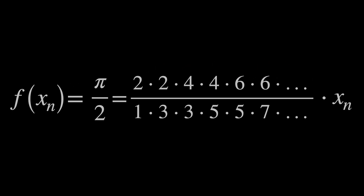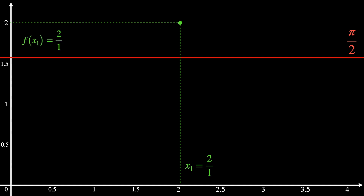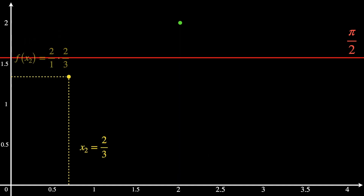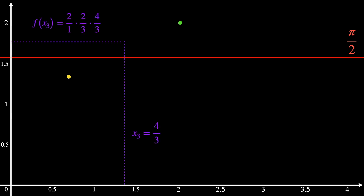Let us plot the graph. Since we want to approximate π over 2, we draw the horizontal asymptote y = π/2. The first input x1 is 2 over 1, and its output f(x1) is also 2 over 1 — no surprises. The next iteration has input x2 = 2 over 3, and the output f(x2) is 2/3 multiplied by the previous term. The second iteration is indeed closer to the asymptote line, but weirdly, it is located below the line. Then x3 is 4 over 3, giving f(x3) as this multiplication of terms — and it went back up.